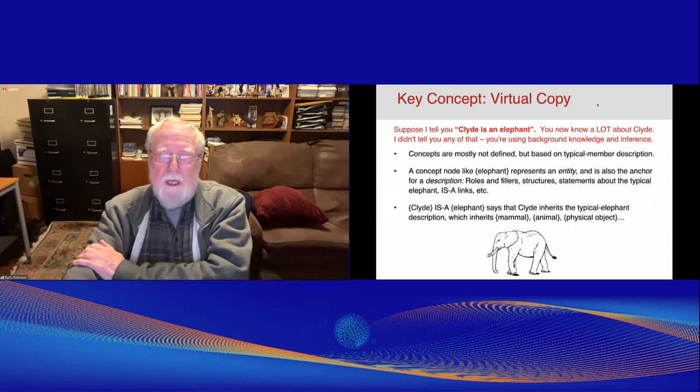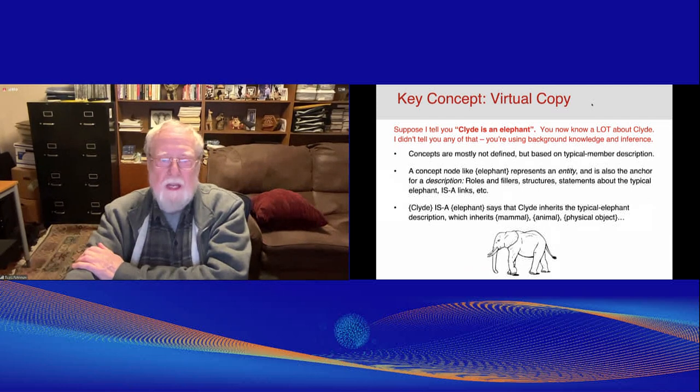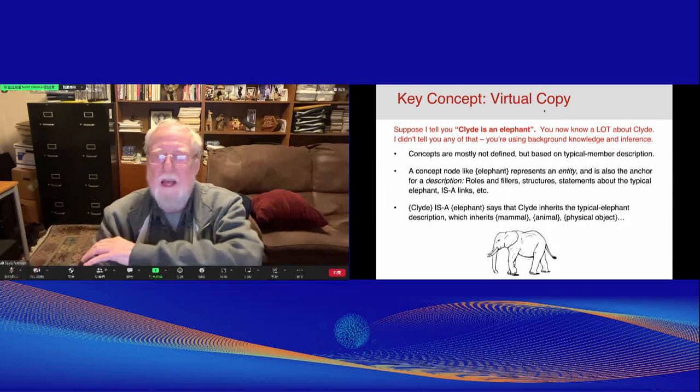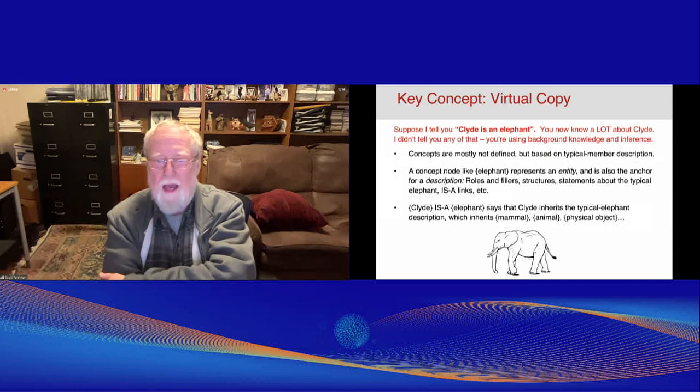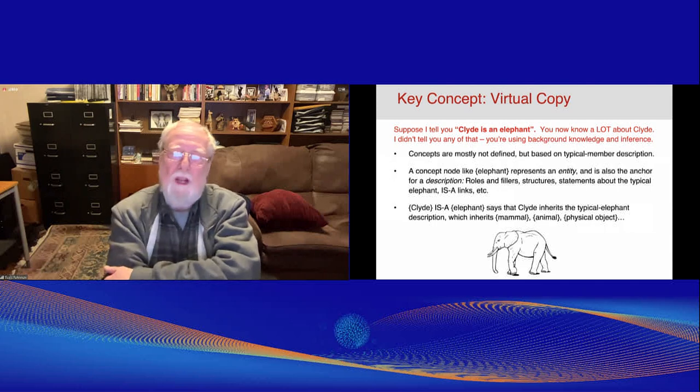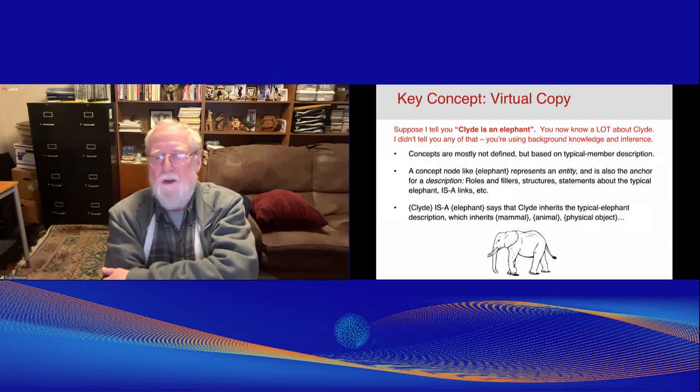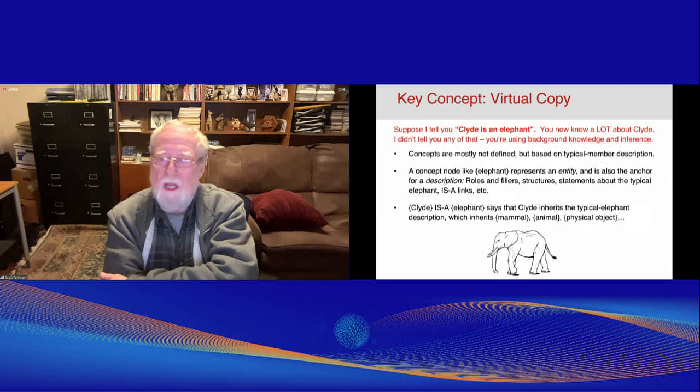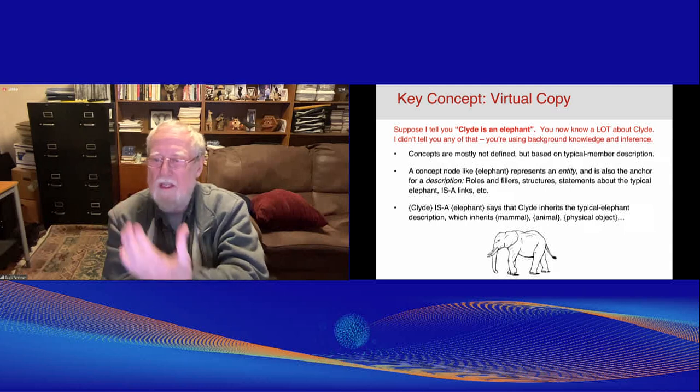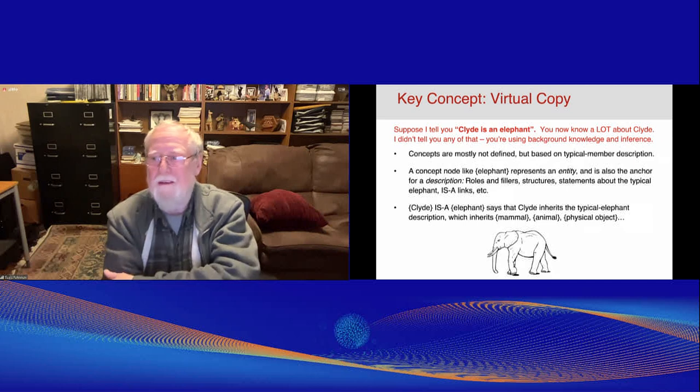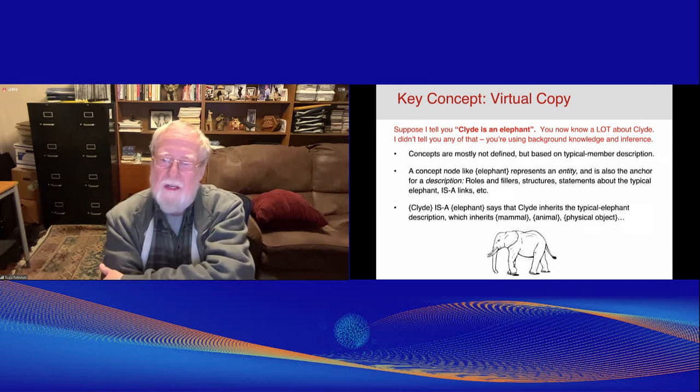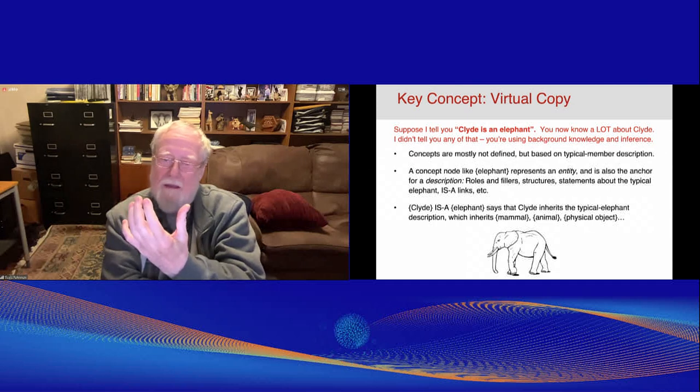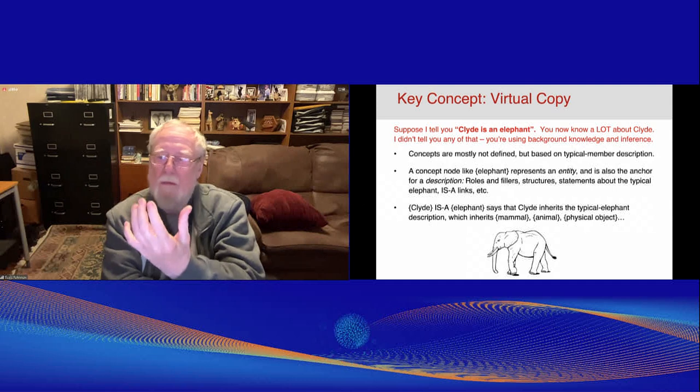So a key concept, and this is something I was playing with back when I was a PhD student in the 1970s, is what I was calling a virtual copy. Suppose I tell you that Clyde's an elephant. You now know a lot about Clyde, and I didn't tell you any of that. You know that Clyde is gray. You know that Clyde has two eyes, probably. You know what it means that those eyes are open or closed. That Clyde has a heart, that Clyde needs air, oxygen, and so on. You're using a lot of background knowledge and inference to get this information about Clyde, because I didn't tell you that.